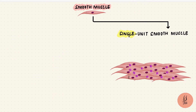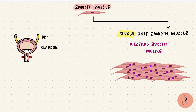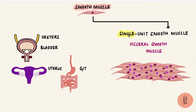Single unit smooth muscles are more widely distributed compared to the multi-unit ones. They're also called visceral smooth muscles, because they are found lining hollow visceral organs, like the bladder, the ureters, the uterus, and the digestive tract. If you think of the ureters and the gastrointestinal tract, you've got an obvious function of smooth muscles here, and that is peristalsis. So smooth muscles are important for peristalsis.